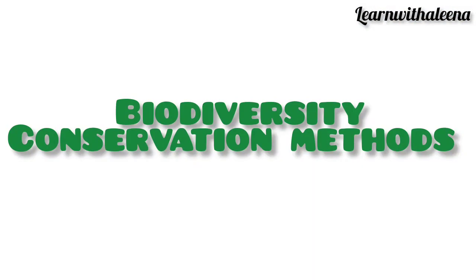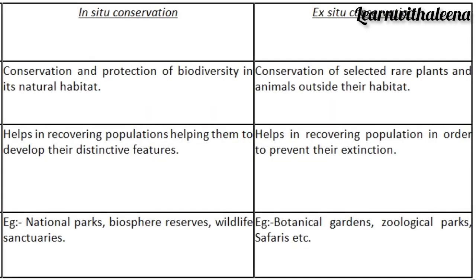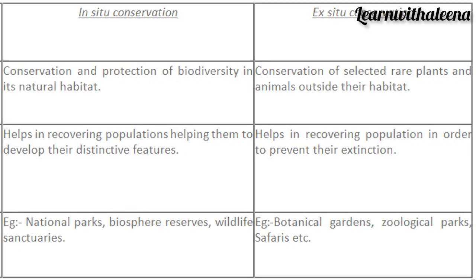Biodiversity conservation methods: there are two types — in-situ conservation and ex-situ conservation. In in-situ conservation, plants and animals are protected in their natural habitat, helping populations recover and develop their distinctive features. In ex-situ conservation, rare plants and animals are taken outside their natural habitat to help recover populations and prevent their extinction. Examples of in-situ conservation include national parks, biosphere reserves, and wildlife sanctuaries. Examples of ex-situ conservation include botanical gardens, zoological parks, and safaris.